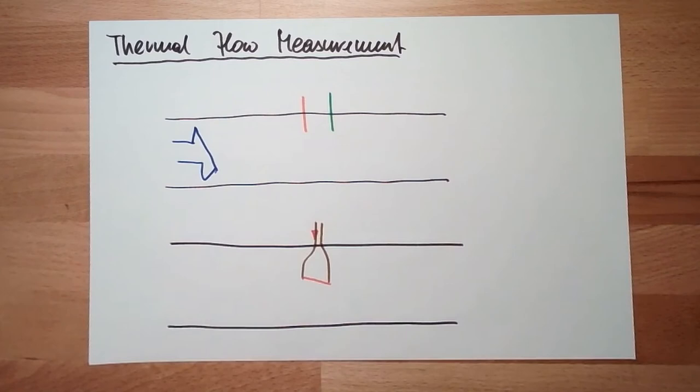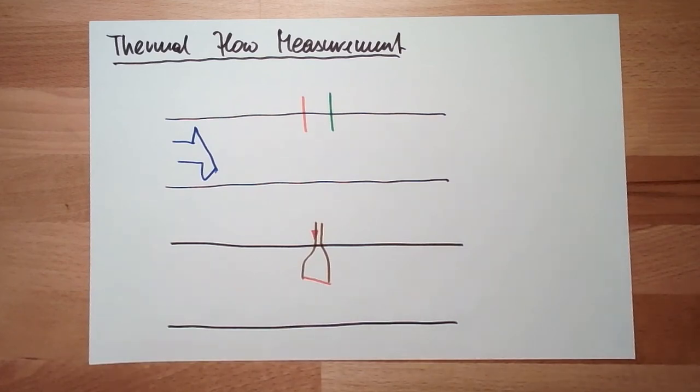Heating wire method, heat start method. This is very common. These things have really high, really precise time resolution. This means they can measure highly dynamic flow changes.